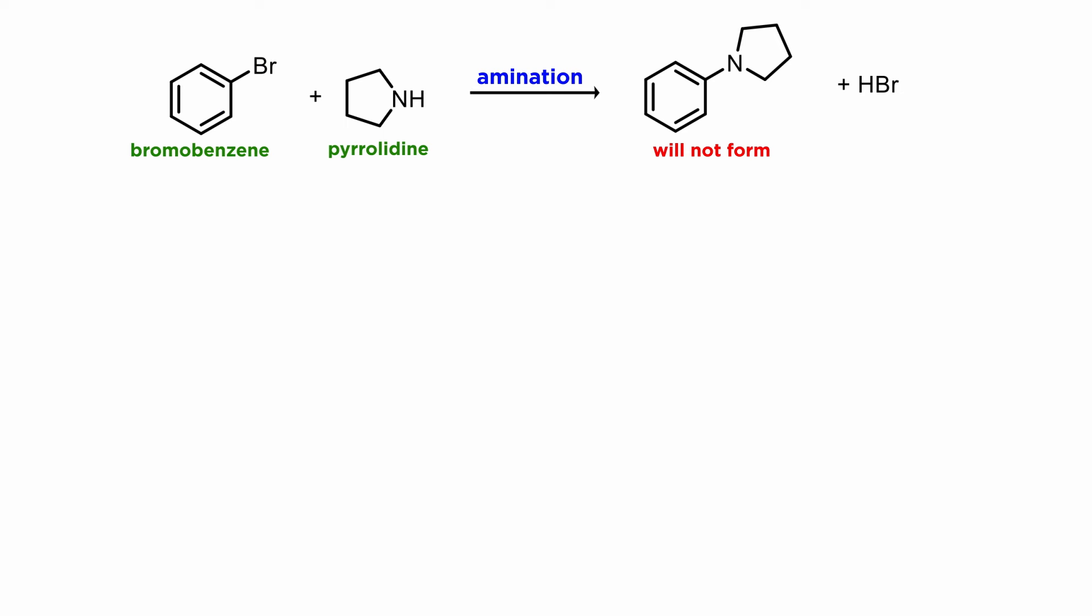To put this into perspective, let's go back to the impossible amination chemistry we mentioned, and consider the reactions that transition metal complexes can carry out. How can we make the reaction work? Well, we can try to find a metal complex that reacts with bromobenzene through oxidative addition. The metal with some ligands will add to the C-Br bond and form an intermediate aryl metal complex.